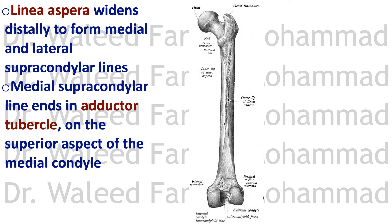The linea aspera on the back of the femur diverges upwards to the spiral line and to the gluteal tuberosity, and diverges downwards to the medial and lateral supracondylar lines or supracondylar ridges, directed towards the epicondyles. The medial supracondylar line goes to the region of the adductor tubercle, which is for the attachment of the adductor magnus muscle.